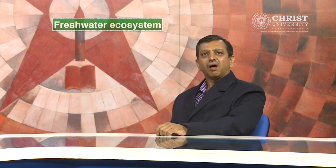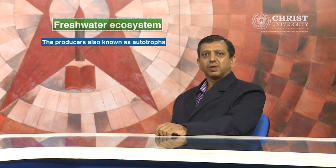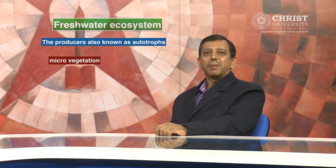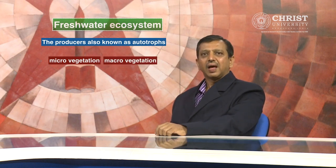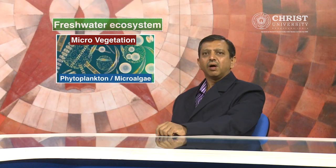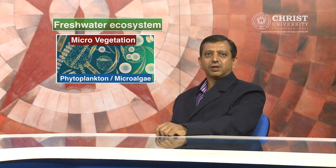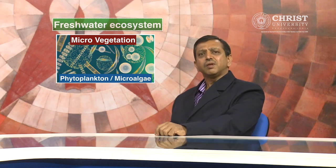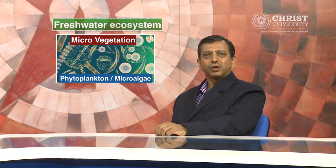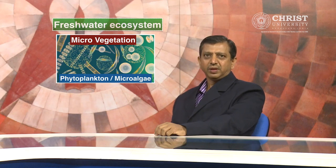Biotic components are producers, consumers and decomposers. The producers, also known as autotrophs, are of two kinds. Some are tiny and known as micro vegetation and some are large and known as macro vegetation. Micro vegetation is called phytoplankton or microalgae. They are tiny, contain chlorophyll and require sunlight to make food by photosynthesis. Most phytoplankton is buoyant and floats on the surface where sunlight penetrates the water. Phytoplankton also require inorganic nutrients such as nitrates, phosphates and sulfur, which they convert into proteins, fats and carbohydrates.